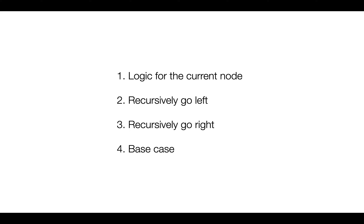However, the sequence of the first three points can vary from problem to problem. For instance, in preorder traversal this order is valid — when we traverse a tree in preorder, we read the current node first, so we write the current node's logic first. Then we traverse the left node recursively, and after that we recursively traverse the right node.